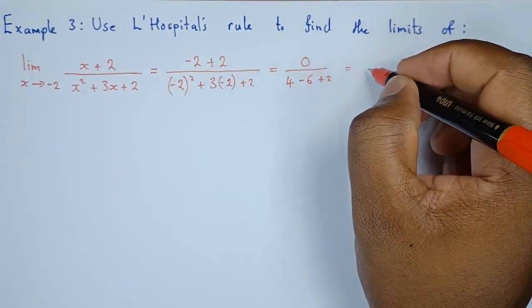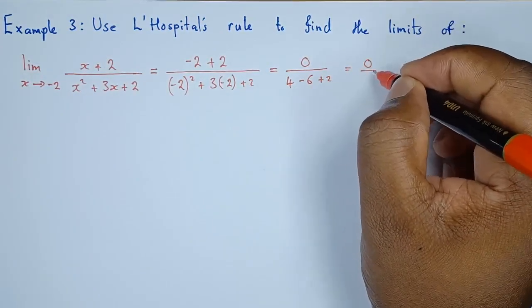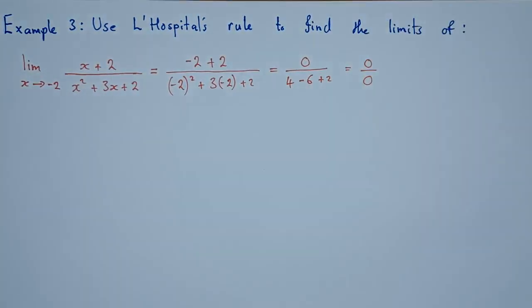Now this expression will just result to 0 over 0. This is not defined or it's indeterminate. So what we're going to do is we're going to take the derivative of both the numerator and the denominator, and that's of course L'Hôpital's rule.